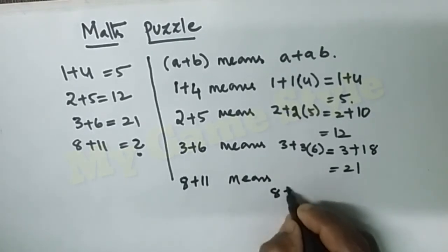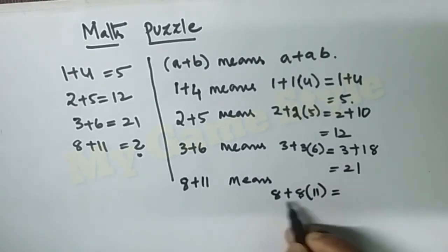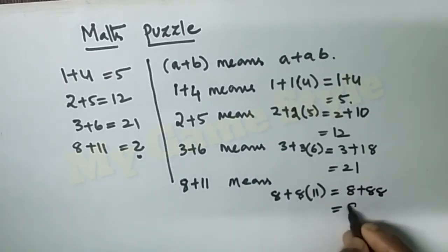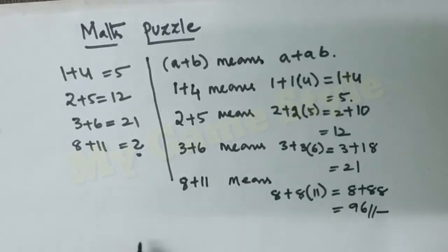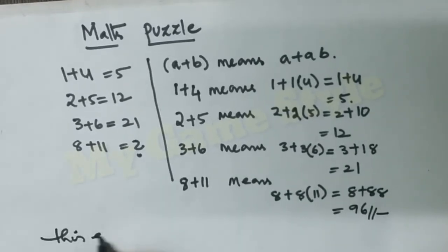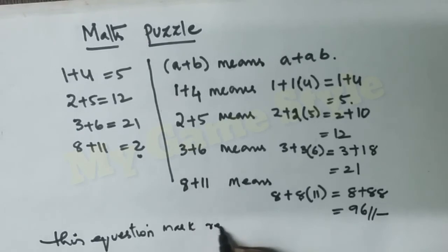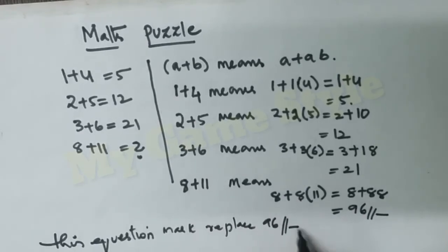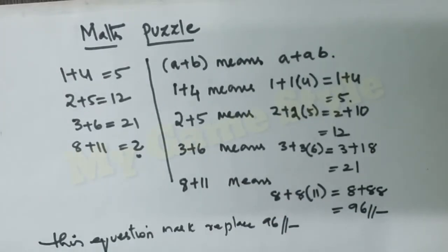...plus 8×11. 8×11=88, so 8+88=96. This question mark we replace with 96. So using this formula, we solved this problem, this math puzzle.